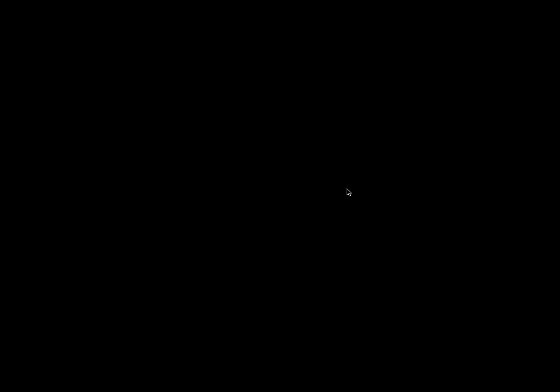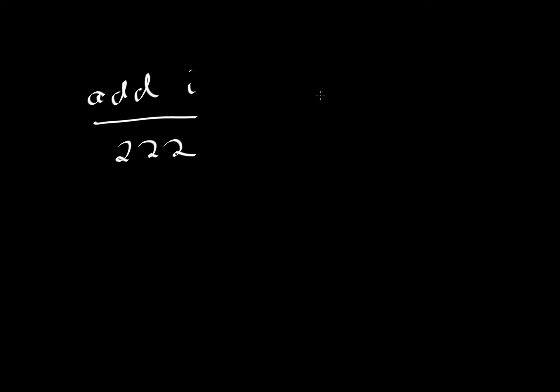For example, let's say we add an i, or a center of symmetry, to something like 2, 2, 2. Then we get the following. From our earlier theorem, if we have a 2-fold rotational axis and we add a center of symmetry, then there must be a mirror perpendicular. So we would have 2 over m, 2 over m, 2 over m.